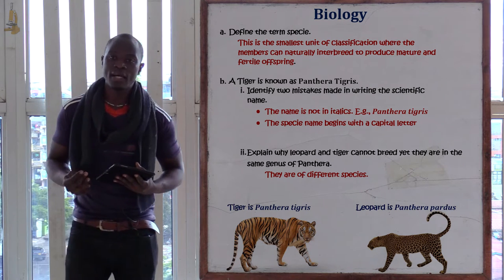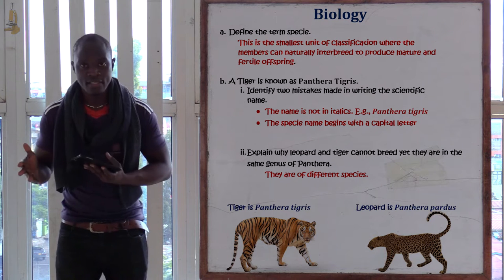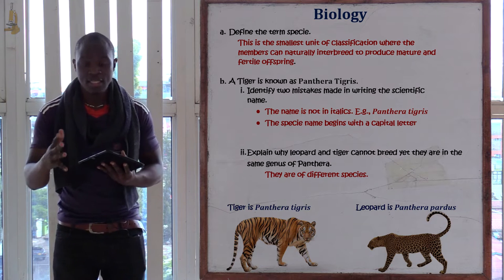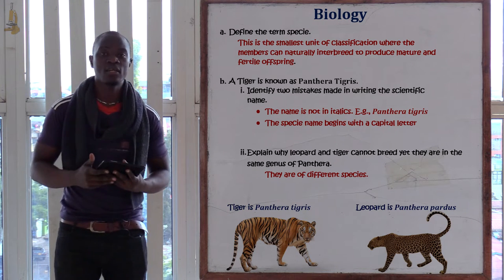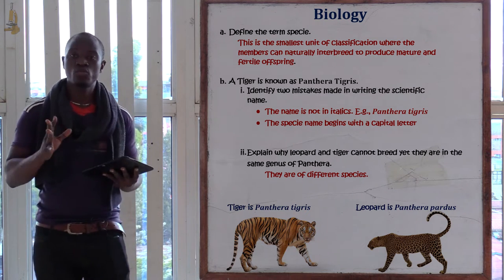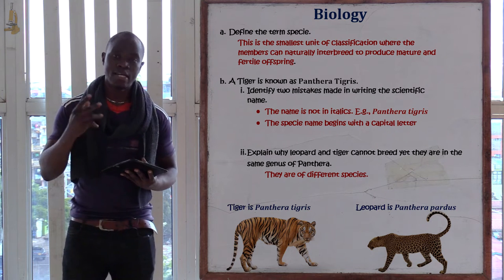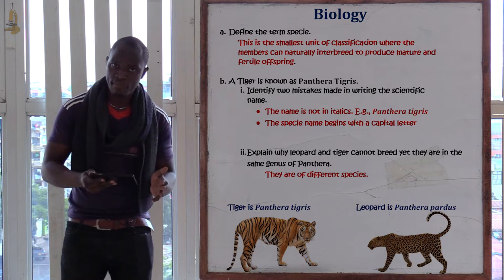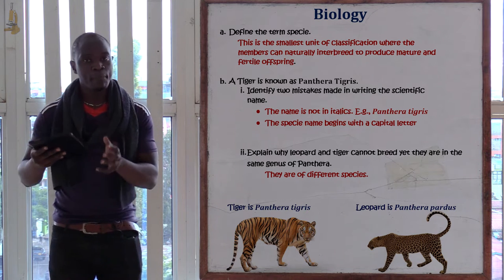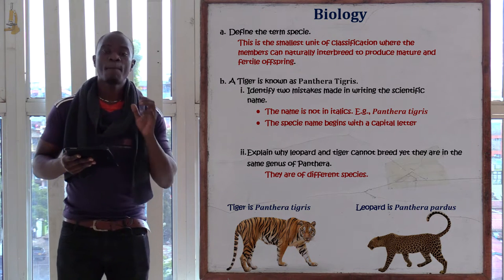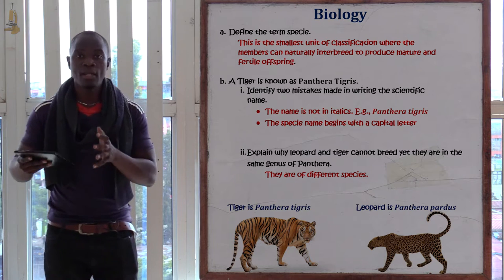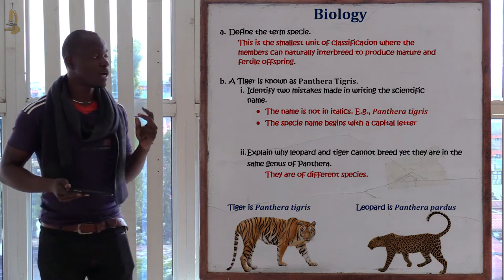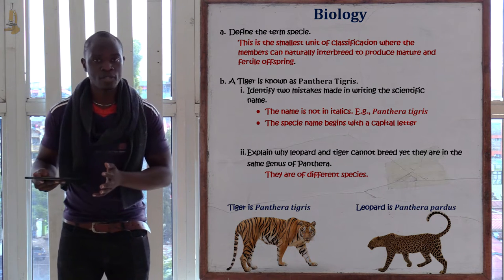The first mistake is that the names are not italicized. The rule is that if scientific names are typed, they must be italicized. The second mistake is that the species name 'tigris' begins with a capital letter. The species name in a scientific name must always begin with a small letter. So those two mistakes are: beginning with a capital letter, and the name not being italicized.